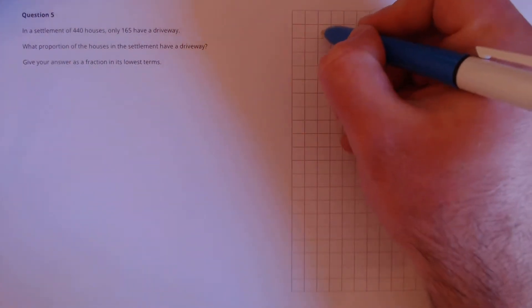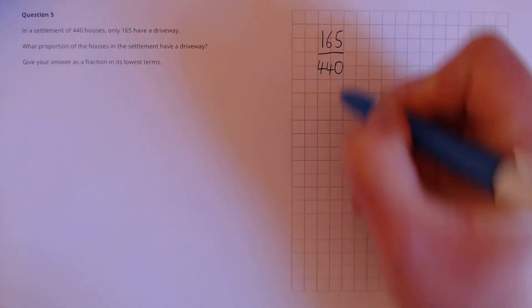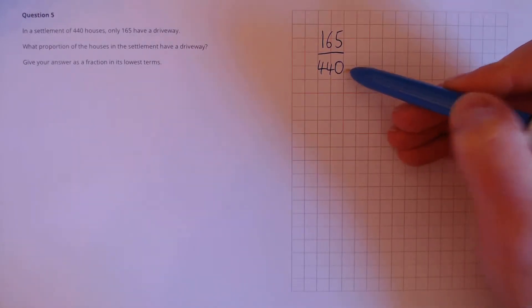So to calculate proportion, we have the number with a driveway divided by the total, 440. We spot that this can be divided by 5. This number ends in a 5 and this number ends in a 0.